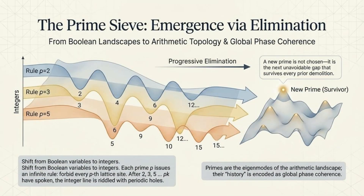The prime sieve shows emergence via elimination. As we shift from boolean variables to integers, each prime imposes an infinite rule, riddling the integer line with periodic holes. Primes are the eigenmodes of the arithmetic landscape, with their history encoded as global phase coherence.